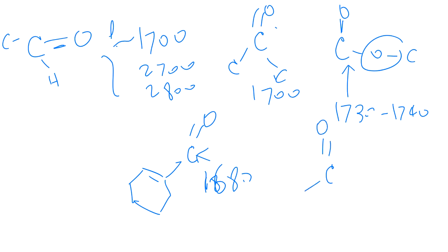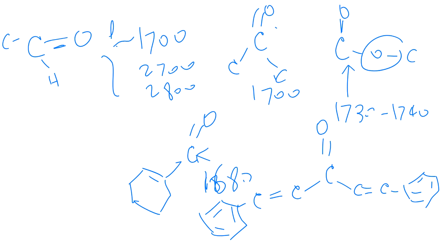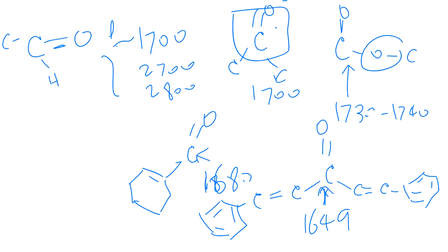The IR spectrum sent for dibenzylideneacetone showed a C=O peak at 1649 — a huge drop due to super-conjugation on both sides of the molecule. Super-conjugation lowers the wave number, while electron-withdrawing groups increase it relative to the ketone or aldehyde baseline.